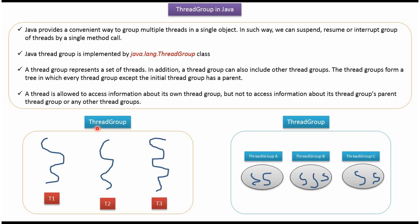We can create a ThreadGroup, and in that ThreadGroup we can add multiple threads. Here you can see a ThreadGroup which contains 3 threads. Using a single method call, we can suspend, resume, or interrupt a group of threads.